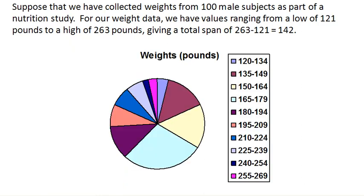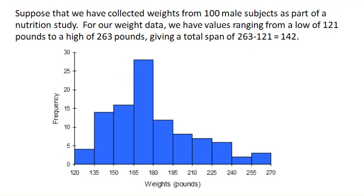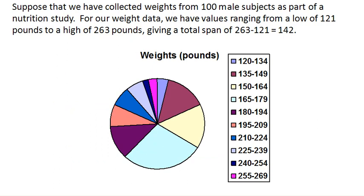And that pie chart would end up looking something like this. And as you can tell, this is really hard to read. Even if we were to put these labels directly on the pie chart, this is probably not a particularly useful representation of the data — certainly not in comparison to our histogram that we had earlier. So when you have a large number of categories or classes, doing pie charts is probably not the best idea.